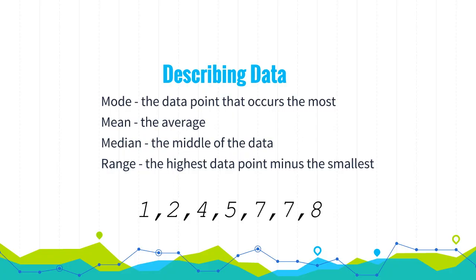Now we move to describing data. Mode is the point in a set of data that occurs the most — in the set 1, 2, 4, 5, 7, 7, 8, the mode is 7. Mean is the average: add all values and divide by the total count, giving 4.85 here. Median is the middle value — counting from both sides, you get 5. Range is the highest data point minus the smallest, giving 7 here.